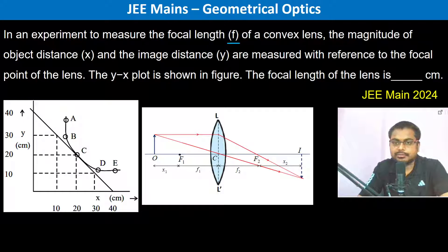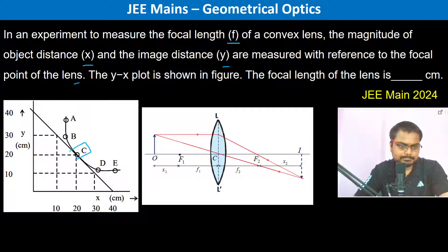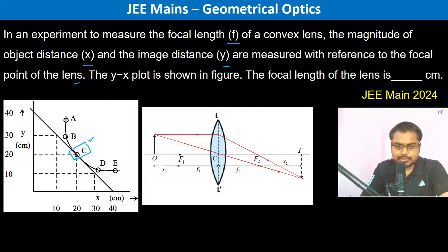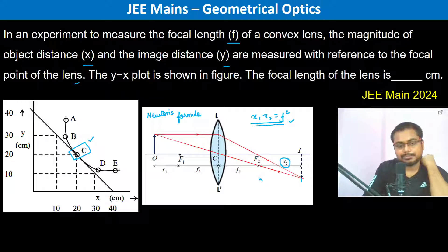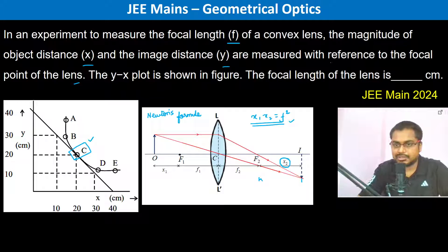In an experiment to measure the focal length f of a convex lens, the magnitudes of x and y are measured with reference to the focal point of the lens, and the y-x plot is shown. We are using Newton's formula for lenses, which states x1 times x2 equals f squared. Here x2 is the distance from f2 of the image, and x1 is the distance from f1 of the object.